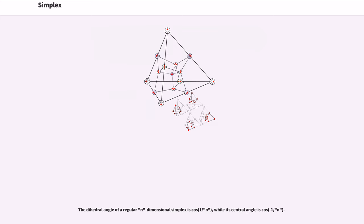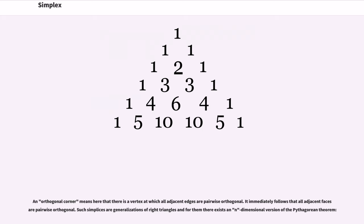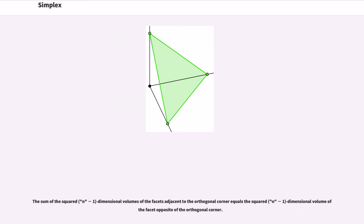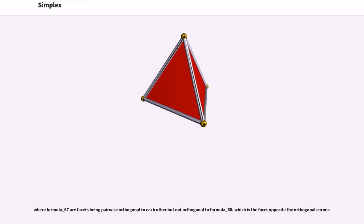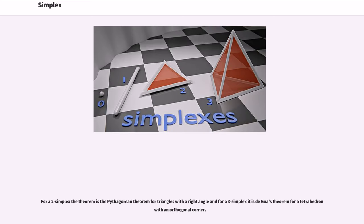The dihedral angle of a regular n-dimensional simplex is cos^{-1}(1/n), while its central angle is cos^{-1}(-1/n). An orthogonal corner means here that there is a vertex at which all adjacent edges are pairwise orthogonal. It immediately follows that all adjacent faces are pairwise orthogonal. Such simplices are generalizations of right triangles and for them there exists an n-dimensional version of the Pythagorean theorem. The sum of the squared n-1 dimensional volumes of the facets adjacent to the orthogonal corner equals the squared n-1 dimensional volume of the facet opposite of the orthogonal corner. For a 2-simplex the theorem is the Pythagorean theorem for triangles with a right angle and for a 3-simplex it is de Gua's theorem for a tetrahedron with an orthogonal corner.